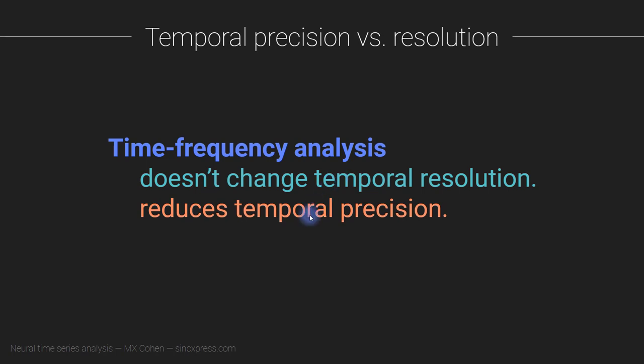However, what you have done is reduce the temporal precision. And why is that the case? The answer is that it has to do with the amount of smoothing that gets imposed by the wavelet or the filtering. When you do your time frequency analysis, you are necessarily imposing some filtering, some temporal smearing. That's necessary because it allows us to get the frequency resolution, but it does mean that we have reduced temporal precision.